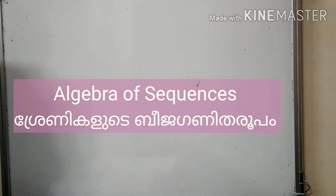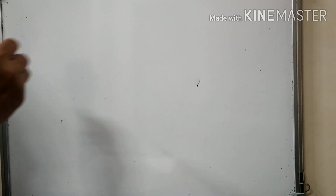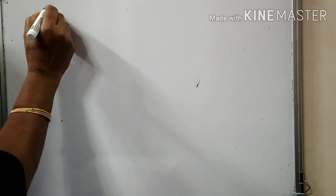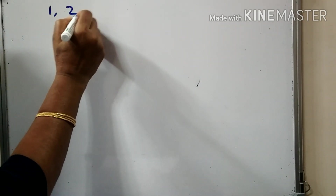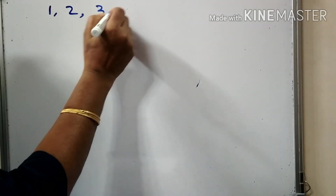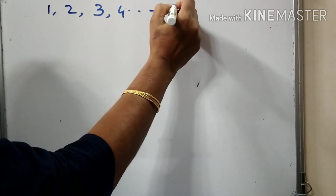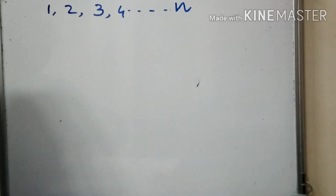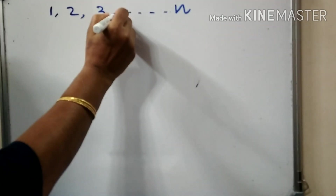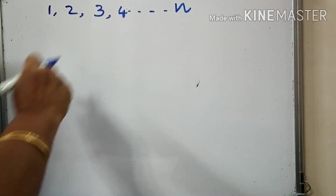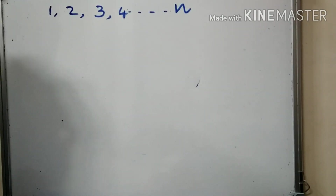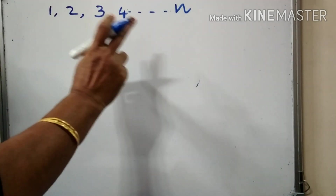What is the sequence we have? Natural numbers: 1, 2, 3, 4, etc. This is the algebraic form. We have to write it.